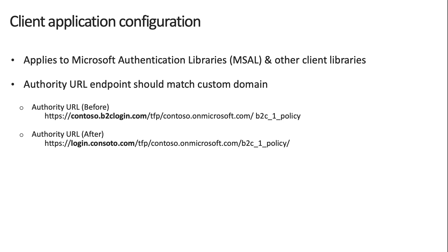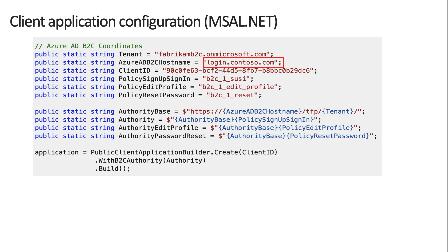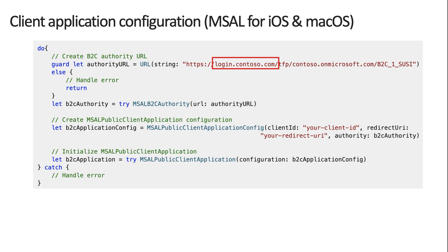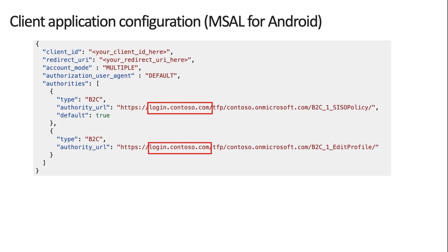After configuring the custom domain, you need to update the client application configuration. In the client app, make sure the authority URL points to the custom domain and not the default b2clogin.com domain. This applies to Microsoft Authentication Libraries (MSAL) for different platforms as well as third-party client libraries. For example, in MSAL.NET the Azure AD B2C host name variable should point to login.contoso.com; in MSAL.js the authority should be updated to login.contoso.com; and similarly for MSAL on iOS, macOS, and Android.